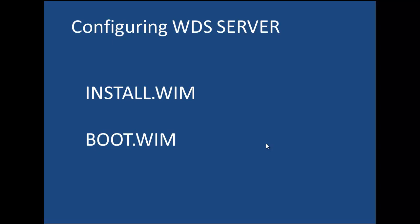Unlike the capture image, the discover image is booted via DVD or a USB key. So remember, after we install the WDS role on the server, you need to add these two WIM files that you get from the sources folder: install.wim, which contains the operating system, and boot.wim, which is a bootable copy of the Windows pre-installation environment.